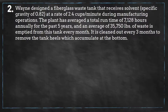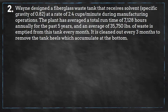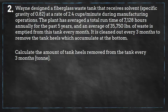Wayne designed a fiberglass waste tank that receives solvent at a rate of 2.4 cups per minute during manufacturing operations. The plant has averaged a total runtime of 7,128 hours annually for the past five years, and an average of 35,750 pounds of waste is emptied from this tank every month. It is cleaned out every three months to remove the tank heels which accumulate at the bottom. Calculate the amount of tank heels removed from the tank every three months.